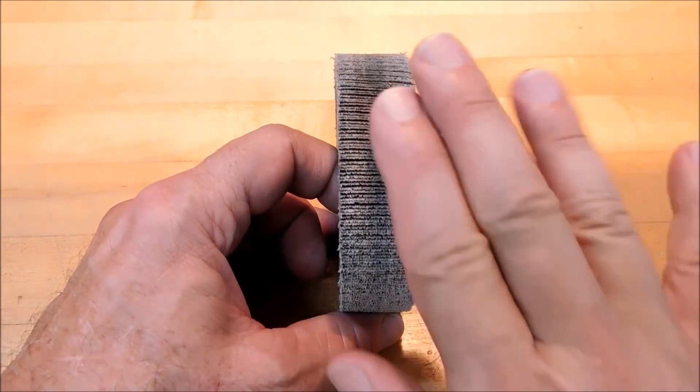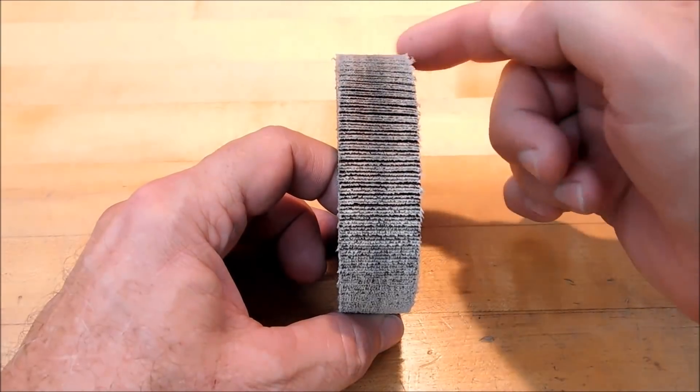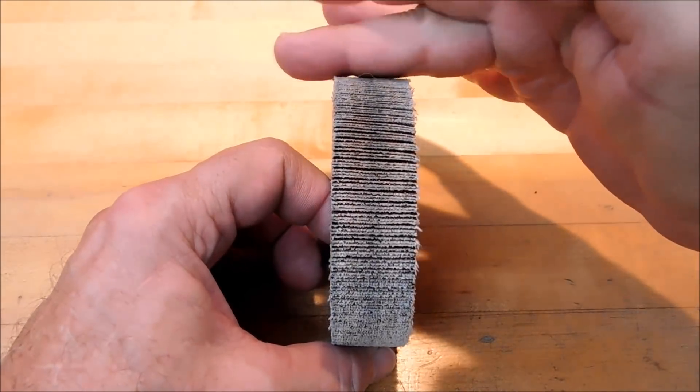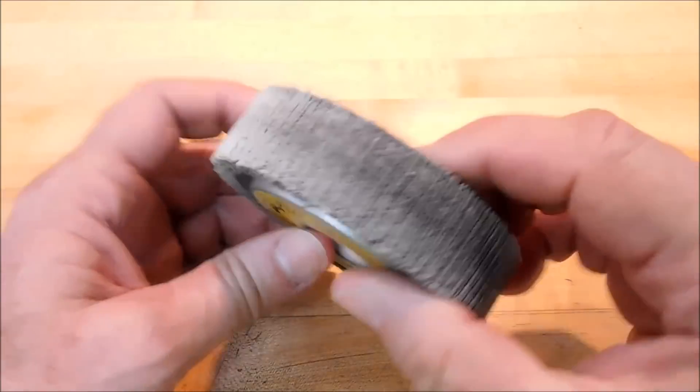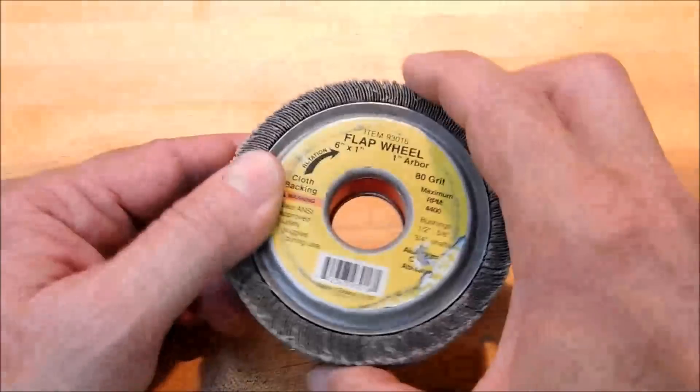When you press it up against the flap sander wheel with the wheel running in reverse, it will cut through the fiber, through the cloth, through the backing, and then get to the abrasive, and it will give you this razor sharp profile. There. You heard it from me first.